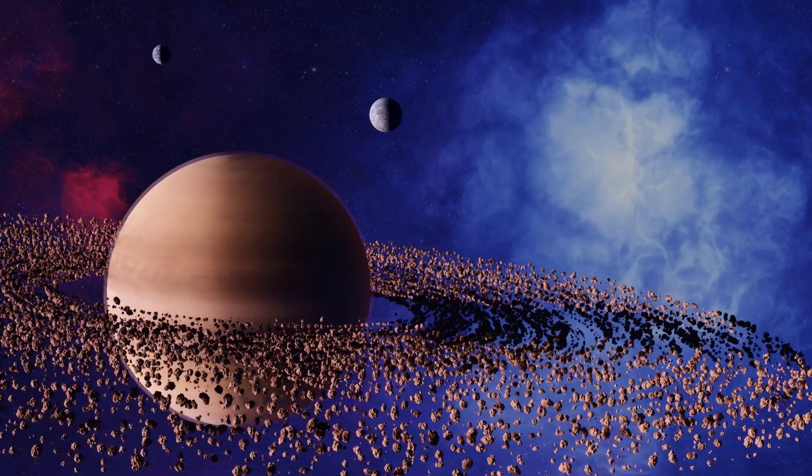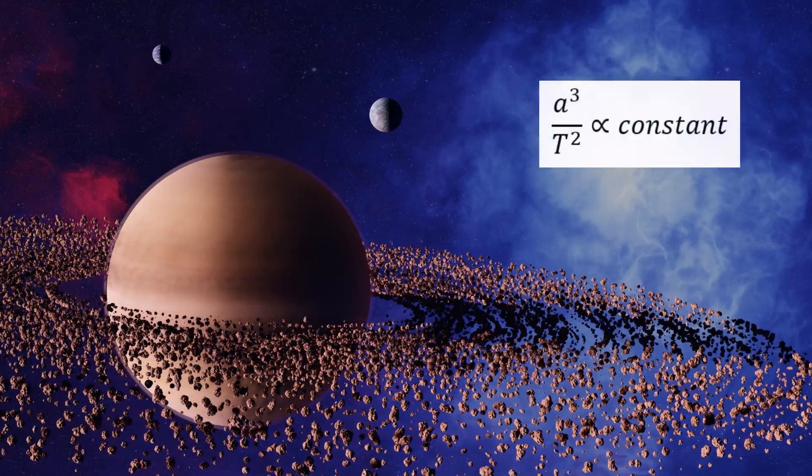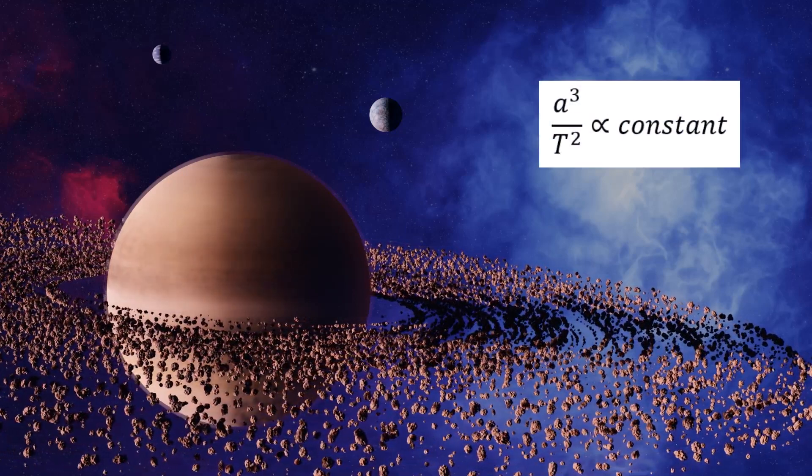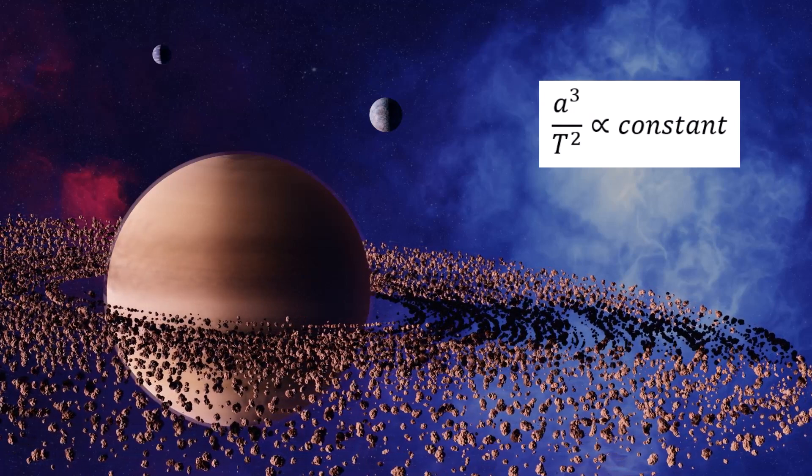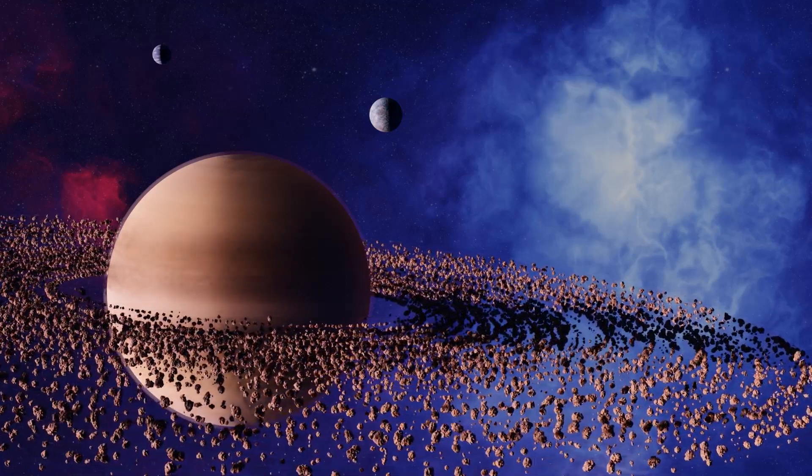You can see that if I were to divide both sides by T squared, you'd be left with a cubed divided by T squared equals a constant. This can be worked out for each planet orbiting the sun by looking at their average orbital radius, which is approximately equal to a, and their orbital period.